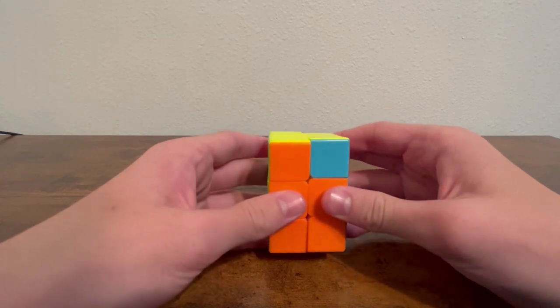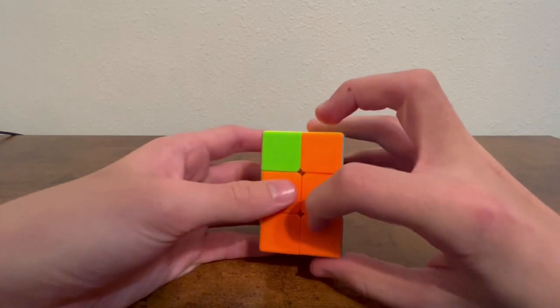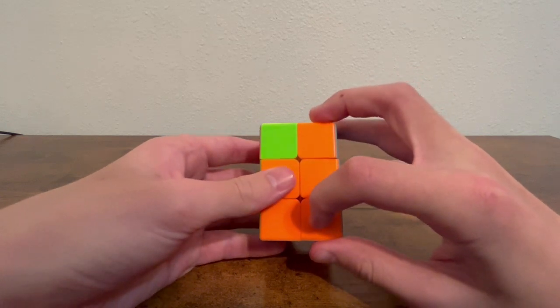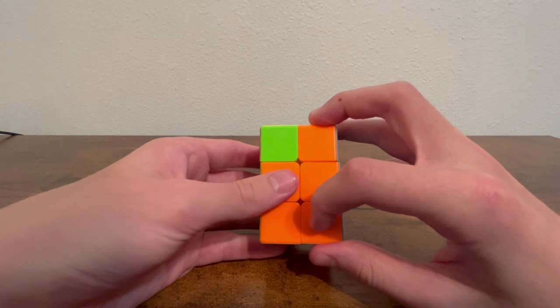So now we have the last step. It's just corner permutation. It's kind of like Ortega. It's pretty easy. There's only seven algorithms.